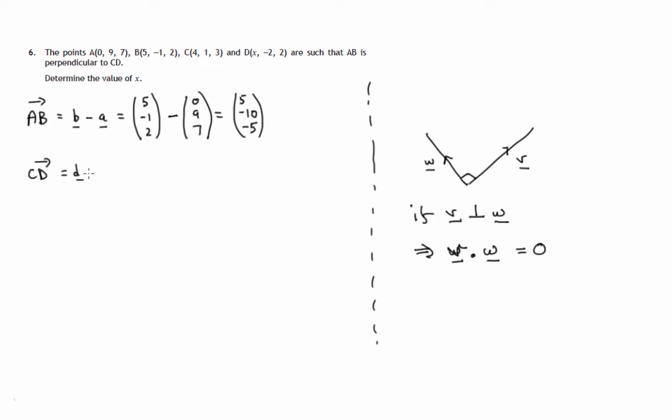Position vector D minus position vector C. Components of position vector D are X minus 2, 2. Components of position vector C, 4, 1, 3. And that results in X component, X minus 4, negative 2 minus 1 is negative 3, and 2 minus 3 is negative 1. So there's the components of these two vectors.